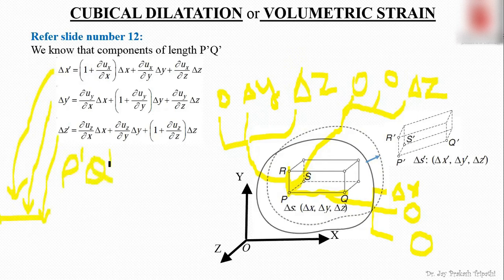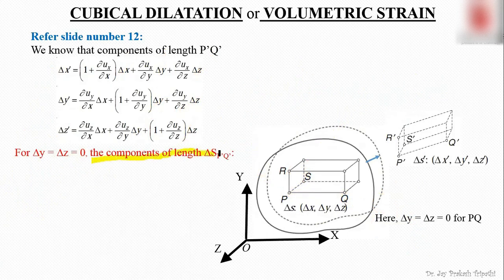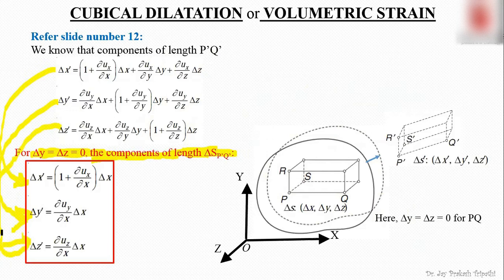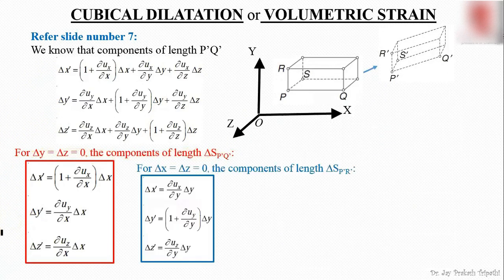Now we can find δx', δy', δz' of line P'Q' by putting δy = 0 and δz = 0. The components of length P'Q' are: δx' = (1 + ∂u_x/∂x)·δx, δy' takes a corresponding form, and δz' is obtained from its respective expression.